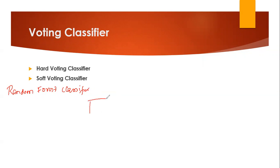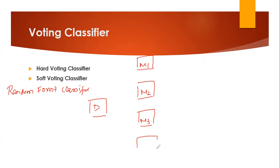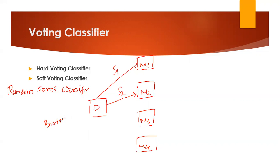Now in random forest classifier, we have a dataset — suppose this is my D. As you know, we create parallel multiple models like M1, M2, M3, M4. These models will basically be created with the help of decision trees inside random forest. Suppose I have four decision trees inside my random forest classifier. What we do is take a sample of the dataset, like S1, with replacement. This step is called bootstrapping. Random forest is also called bootstrap aggregation, so we take samples of data and provide them to each and every model, which is a decision tree.